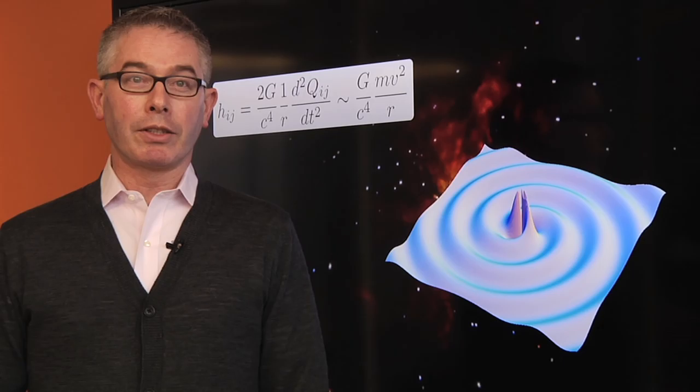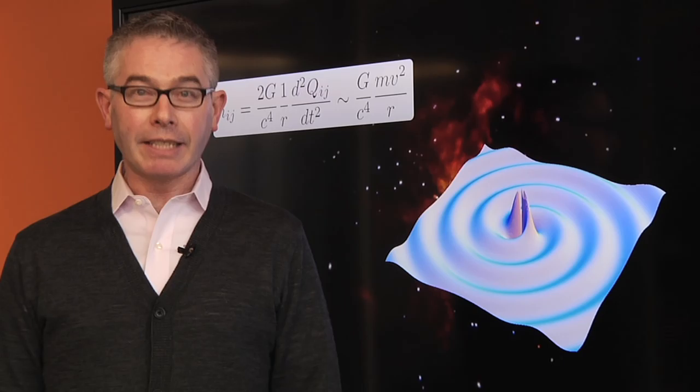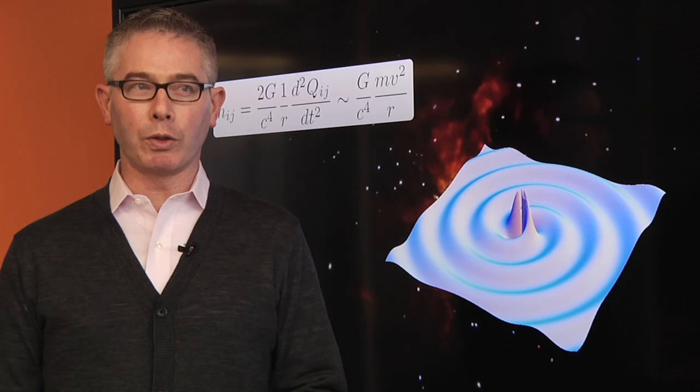So gravitational waves are ripples in the curvature of space-time that were predicted by Einstein almost a century ago. And this is Einstein's recipe for gravitational waves. It tells us that when matter shakes around it generates those ripples.